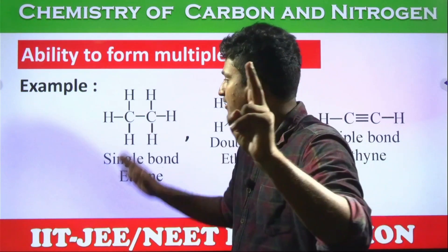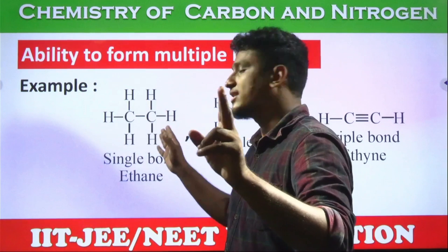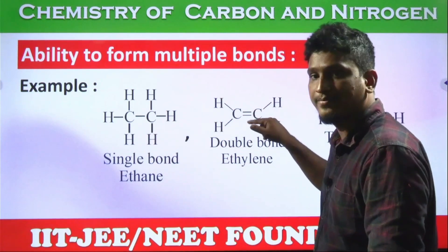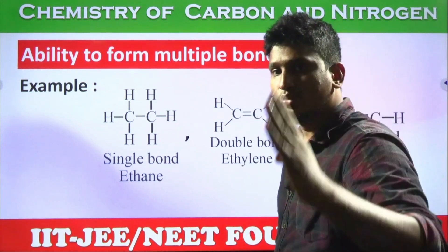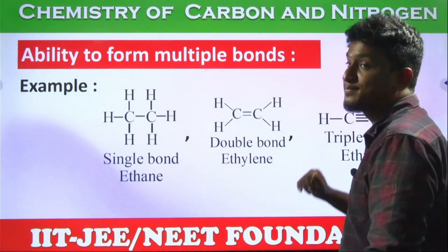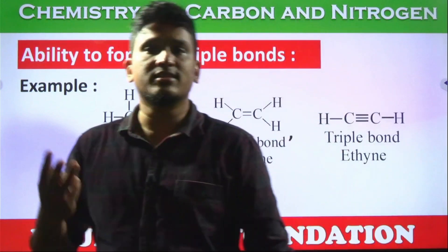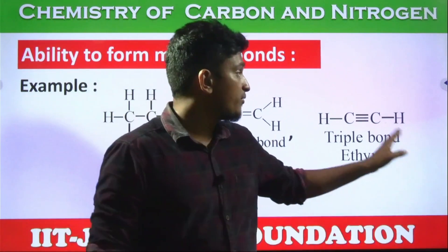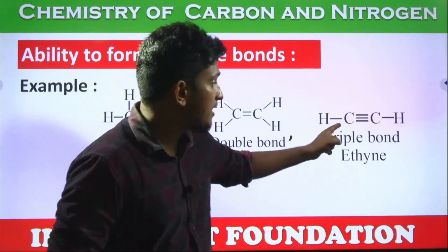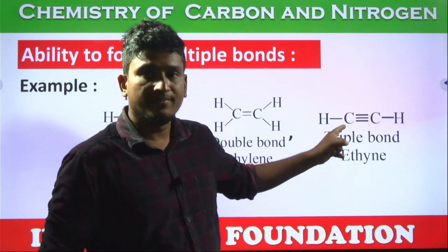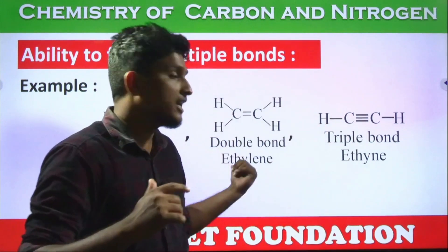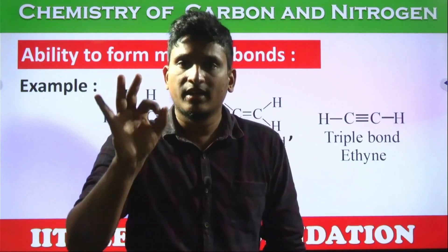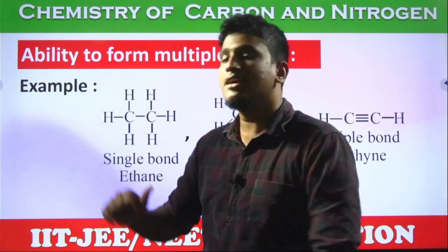A single bond between two carbon atoms is one covalent bond made up of two electrons — one from each carbon. A double covalent bond contains two bonds, represented by two lines, involving four electrons — two from each carbon. A triple bond contains three bonds — three electrons from one carbon and three from the other. The remaining electron bonds with hydrogen to satisfy carbon's tetravalency.